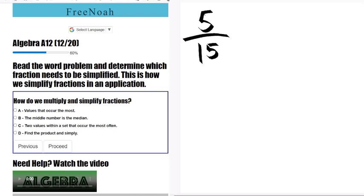So we say five over 15. Let's find our prime factorization here: one times five. Now let's do 15. We have three times five. We can break this down into three times five.